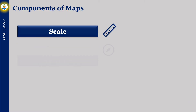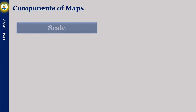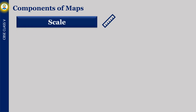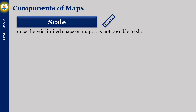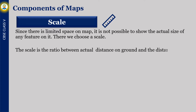The components of maps are scale, direction and symbols. Since there is limited space on a map, it is not possible to show the actual size of any feature on it, so we choose a scale. The scale is the ratio between the actual distance on the ground and the distance shown on the map.